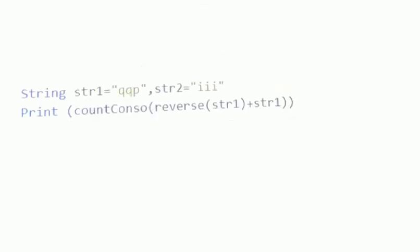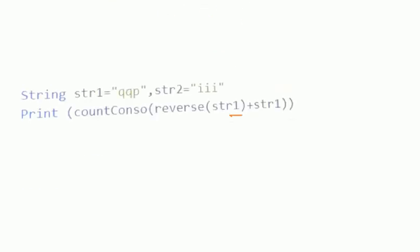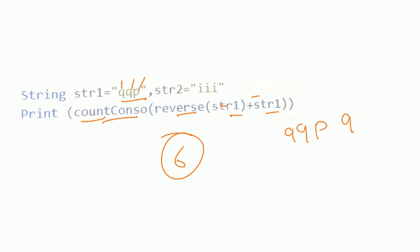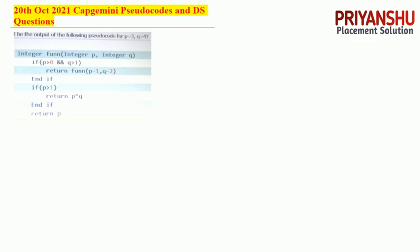The next question involves reverse string. String one has consonants: count them — one, two, three — total answer is 6. Note that reversing the string doesn't matter here because we only need to count consonants in the original string.